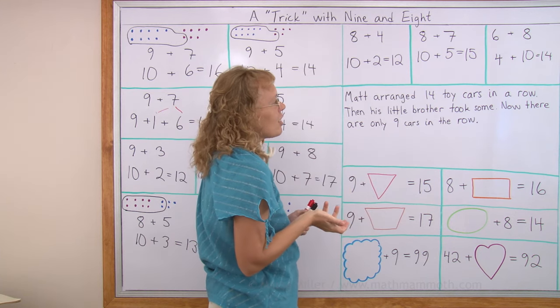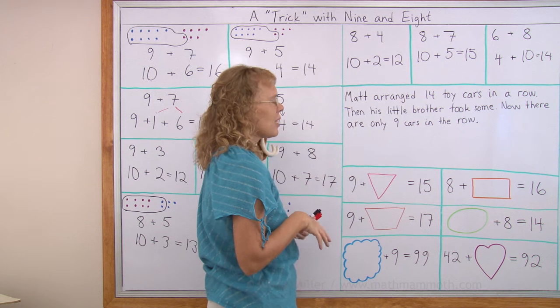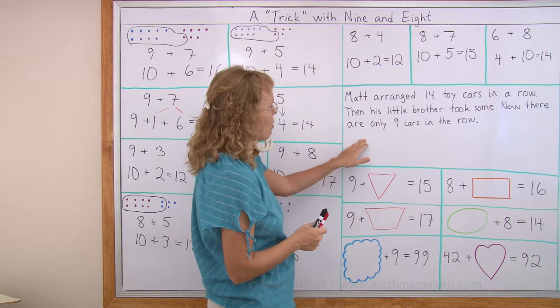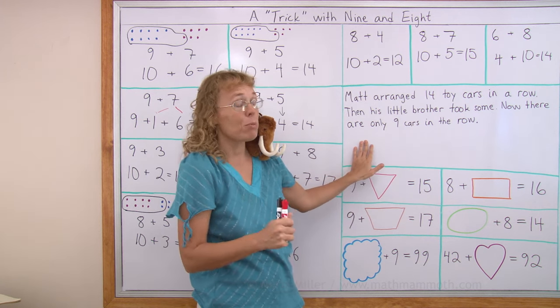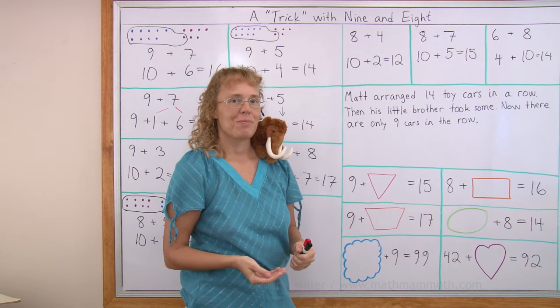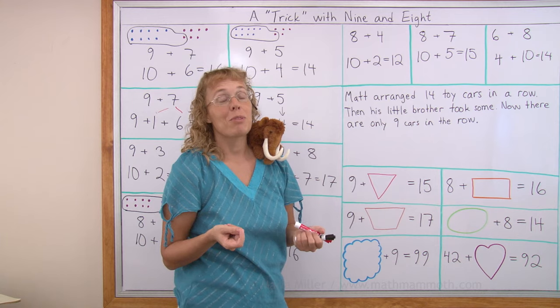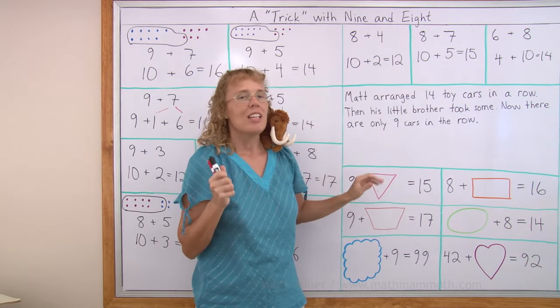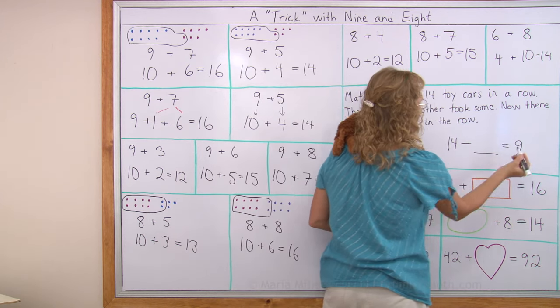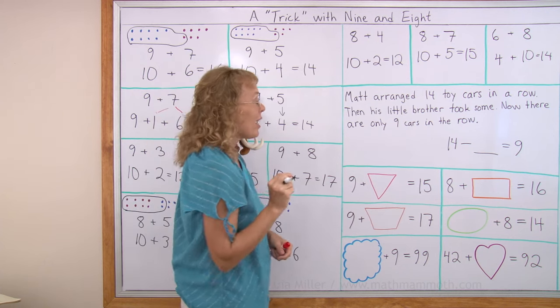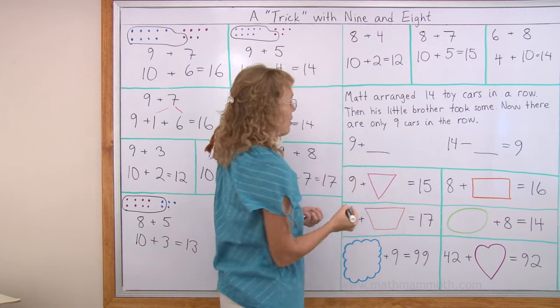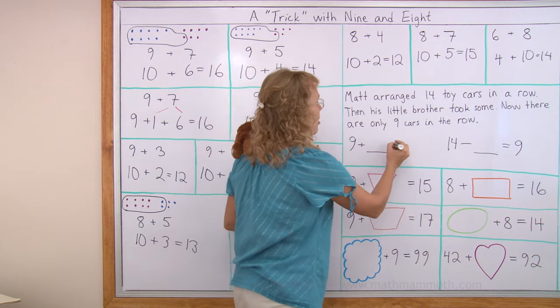Matt arranged 14 toy cars in a row. Then his little brother took some. Does that ever happen to you? Little brother comes and messes up your game. Now there are only 9 cars in the row. But again, the question is lacking. What can we ask? If this is a math word problem, what would you ask? There were 14 toy cars in a row. Little brother took some. Now there are only 9 cars in the row. Well, I would ask, how many cars did the little brother take?